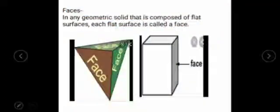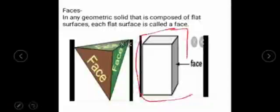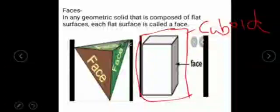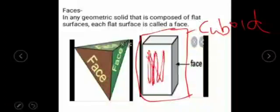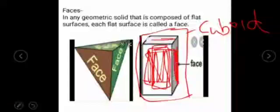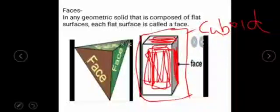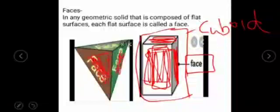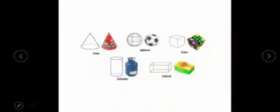First of all we need to know what a face is. In any geometric solid that is composed of flat surfaces, each flat surface is called a face. For example, this is one solid object. You know which solid is this? This is a cuboid. So what will be a face of the cuboid? The flat surface that we can see, this flat surface, the black shaded one. This is the flat surface we can see and this is called a face.